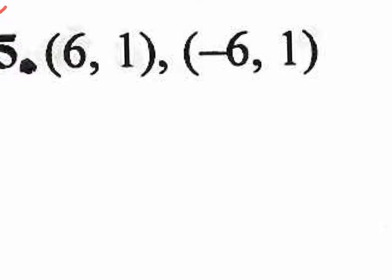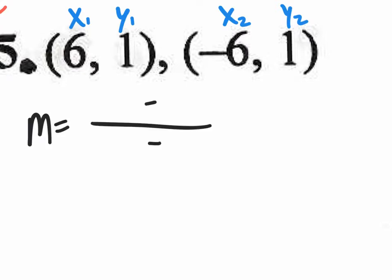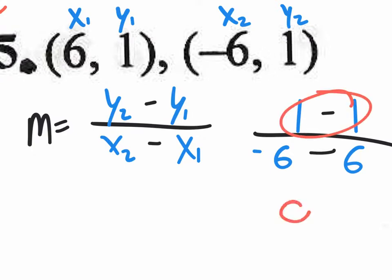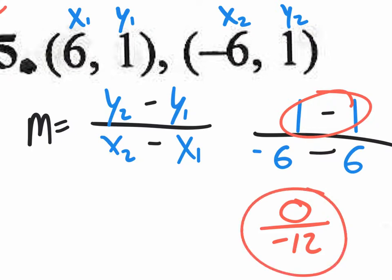Number five — label the coordinates, then write down the formula. Plug in y2 minus y1 over x2 minus x1. y2 is 1, y1 is 1, x2 is negative 6, x1 is positive 6. In the numerator: one take away one is zero. On the bottom: negative 6 take away 6 is negative twelve. So we have zero over negative twelve.